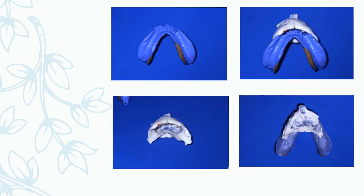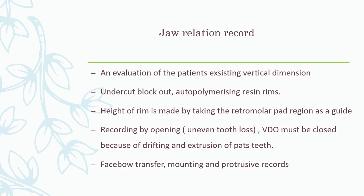For jaw relation records, the mounted cast is observed to assess whether the vertical dimension of occlusion is appropriate or has collapsed due to posterior tooth loss. Undercuts are blocked out, a denture base is made, and occlusal rims are prepared with modelling wax. The height of the rim is determined by reference to the remaining natural teeth visible on the patient's card, which serve as an index for the level of the rim.